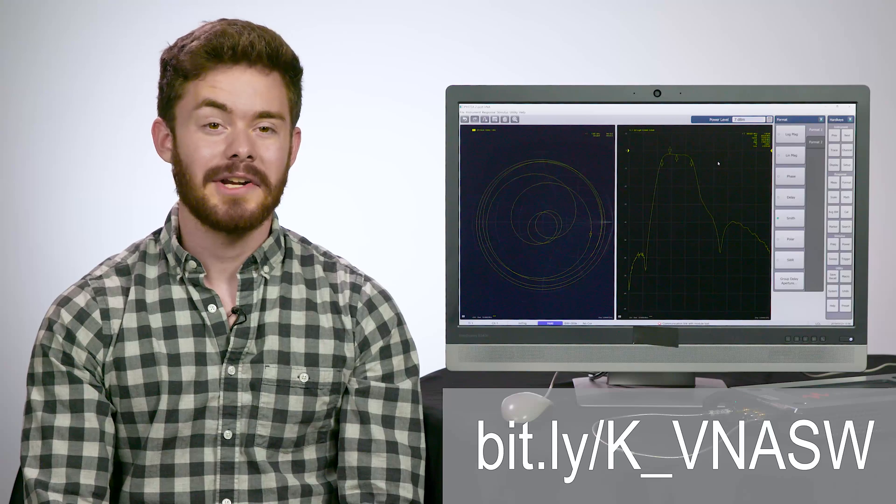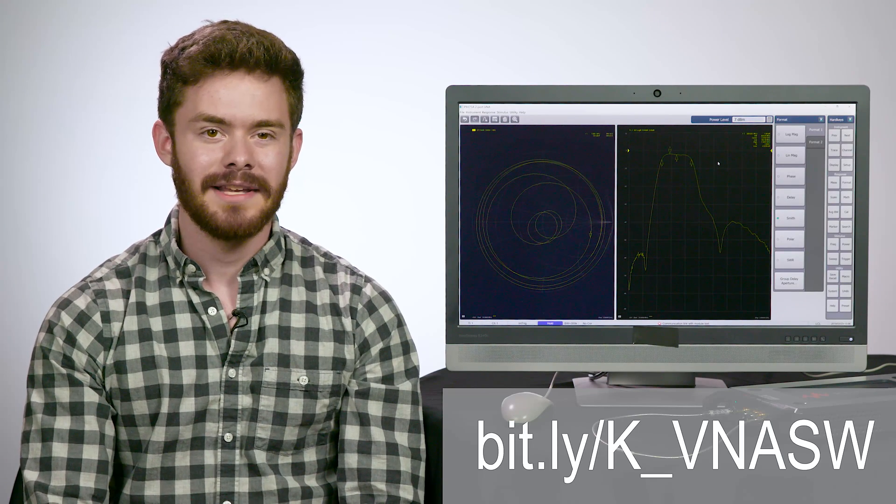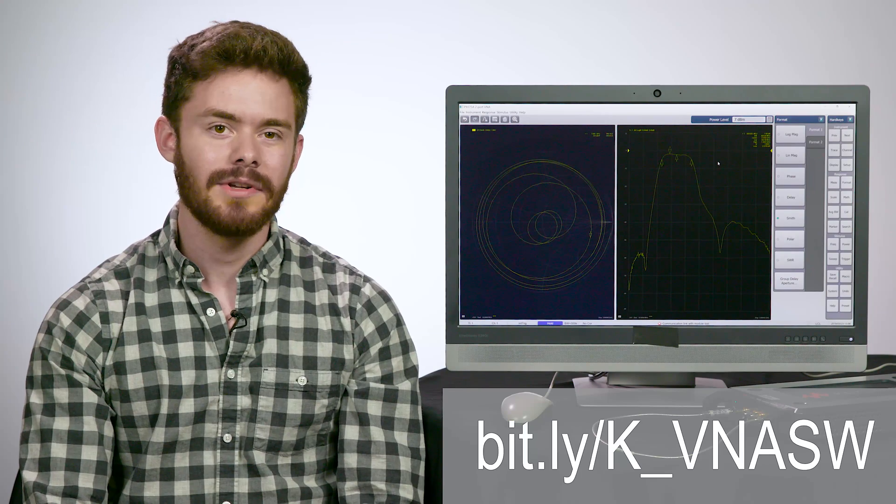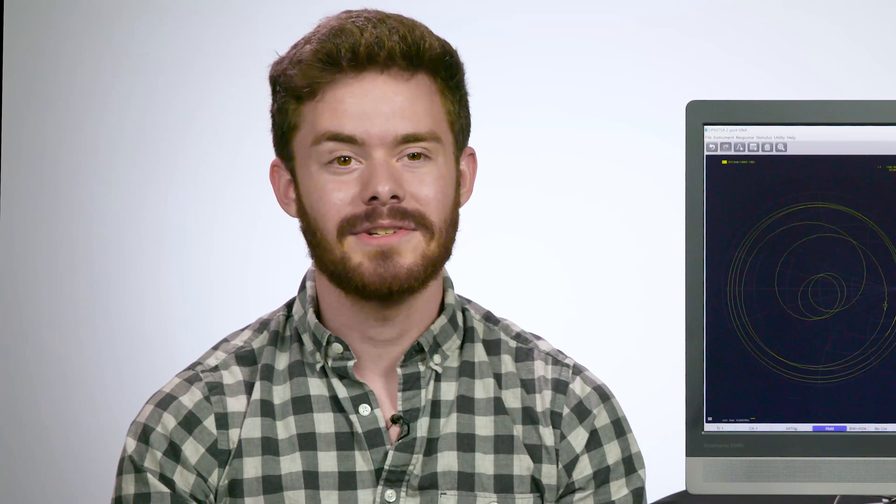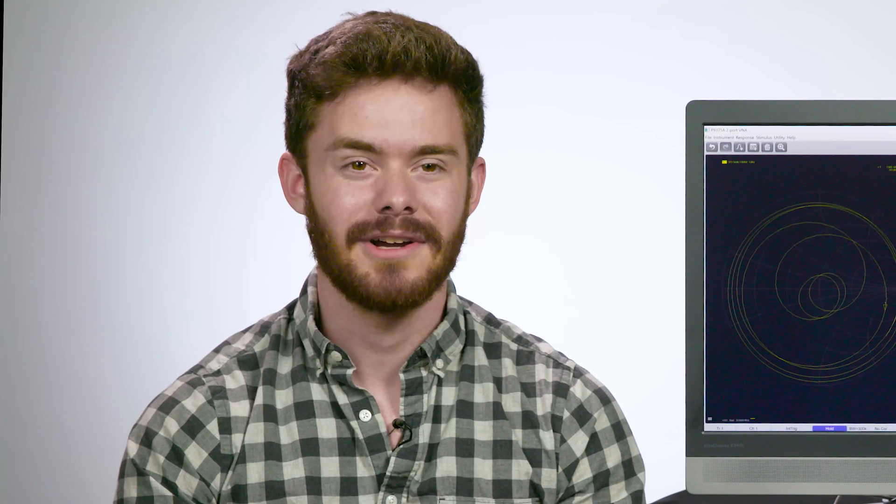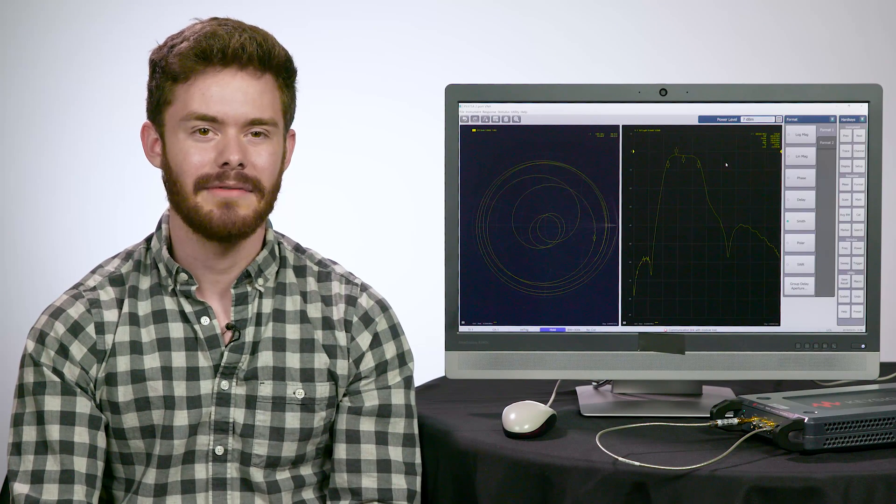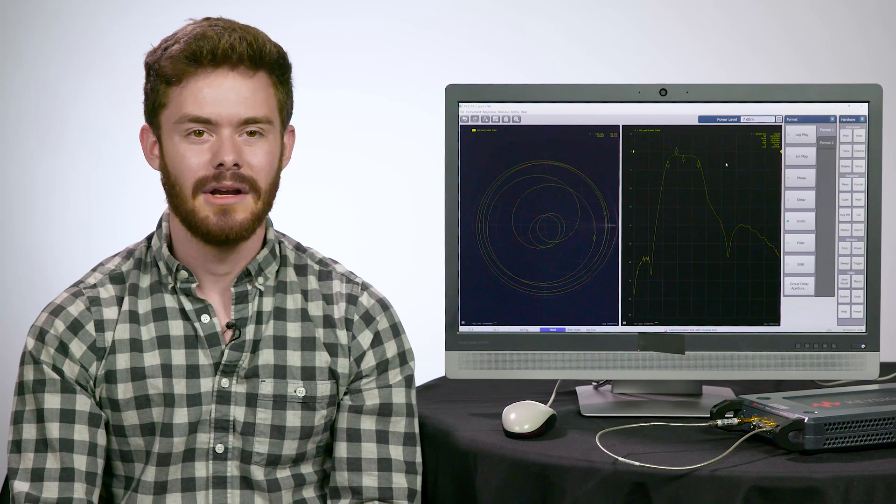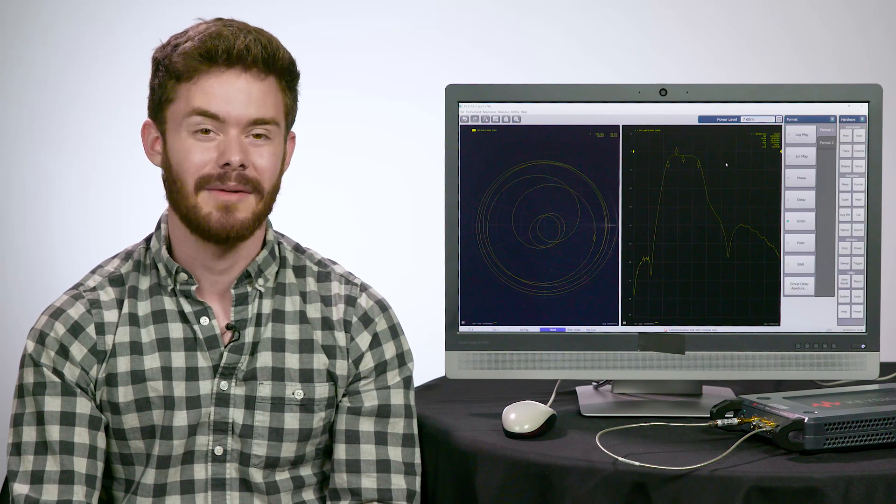The firmware is what will actually allow you to control the instrument on your PC. You can find this link in the description below, or you can find it under the support section of the webpage. Once the firmware is installed, it will prompt you to restart your computer. After the restart, you'll see an icon for the software on your desktop. Before you open the software, plug in the USB cable of the instrument into your PC.